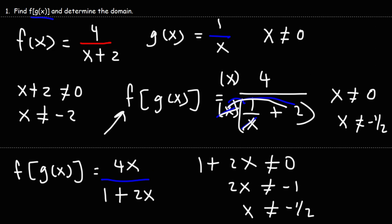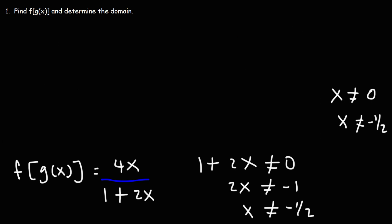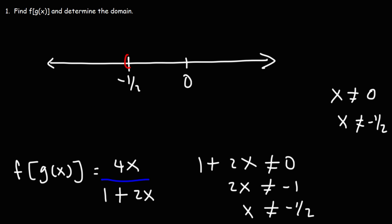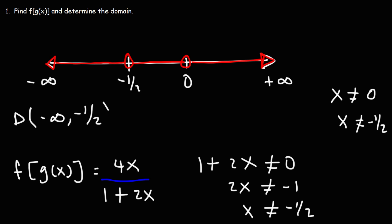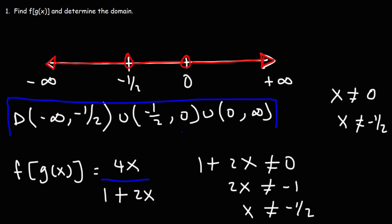Now that we know x cannot be negative 1 half or 0, we can express this on a number line with open circles at negative 1 half and 0, shading everything else from negative infinity to positive infinity. In interval notation, the domain is negative infinity to negative 1 half, union negative 1 half to 0, union 0 to infinity. That is the domain of the composite function f of g of x.